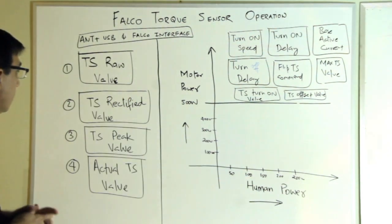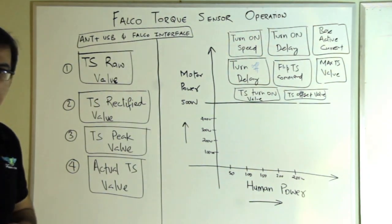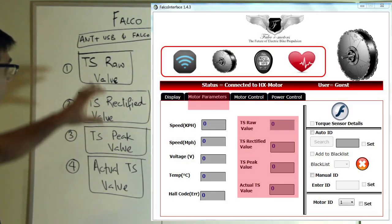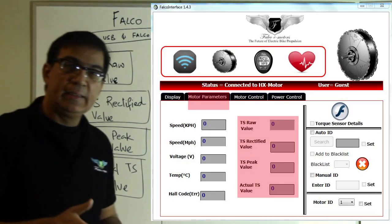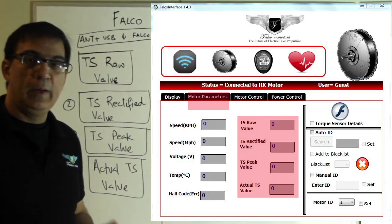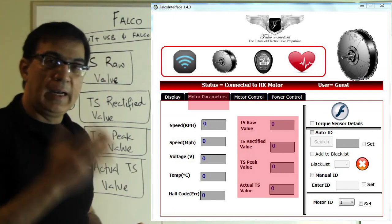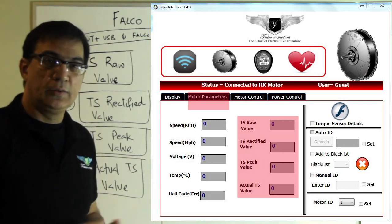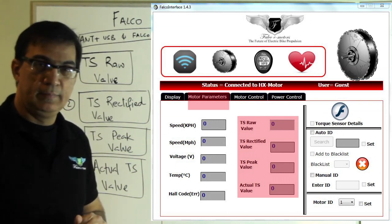The first thing is we want to focus on these four parameters. These four parameters allow us to make sure that when you are not pedaling, when the bike is at standstill, the torque sensor is correctly calibrated.